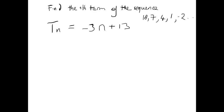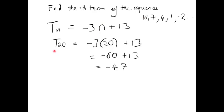So if we wanted to find what the 20th term in this sequence would be, all we'd have to do is put in 20 for n. Term 20 would be equal to minus 3 times 20 plus 13. If we work that out, it gives us minus 60 plus 13, which is minus 47. So the 20th term of this sequence would be minus 47, which makes sense because we're going down all the time, so it's going to be a minus number.